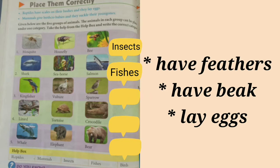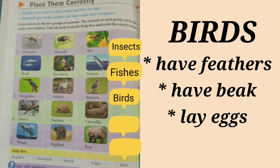In the third group of animals, there is kingfisher, vulture and sparrow. All have feathers, they have a beak and lay eggs. These are birds.